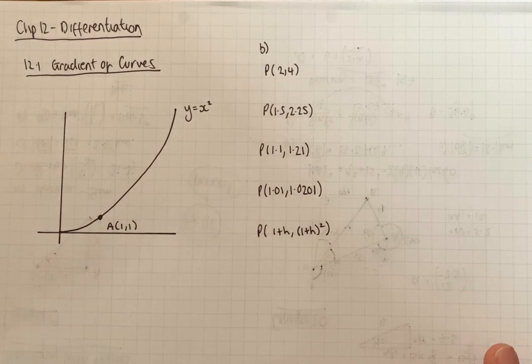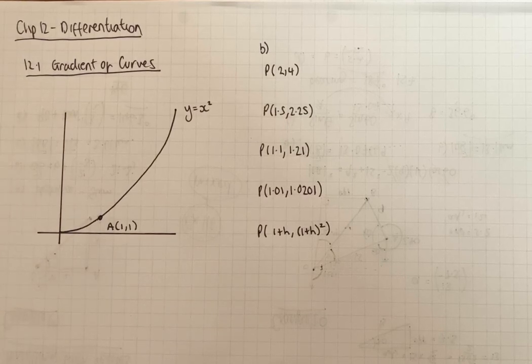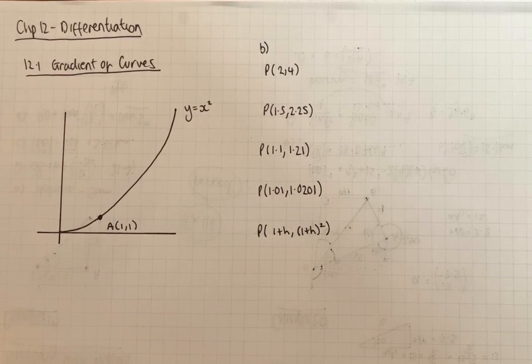On to Chapter 12 which is Differentiation. Differentiation is a branch of mathematics called Calculus. It's the first really new branch of mathematics you've come across on the A-level course.